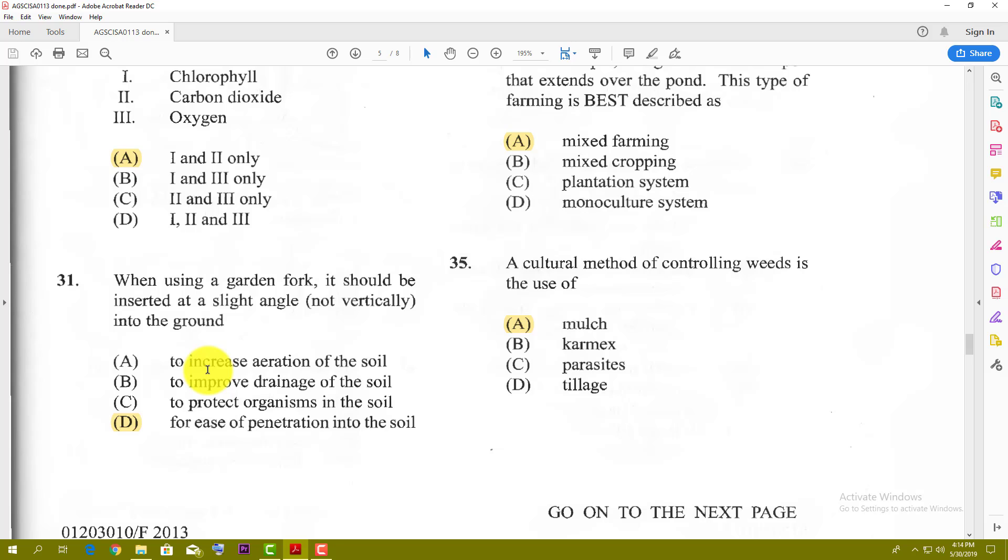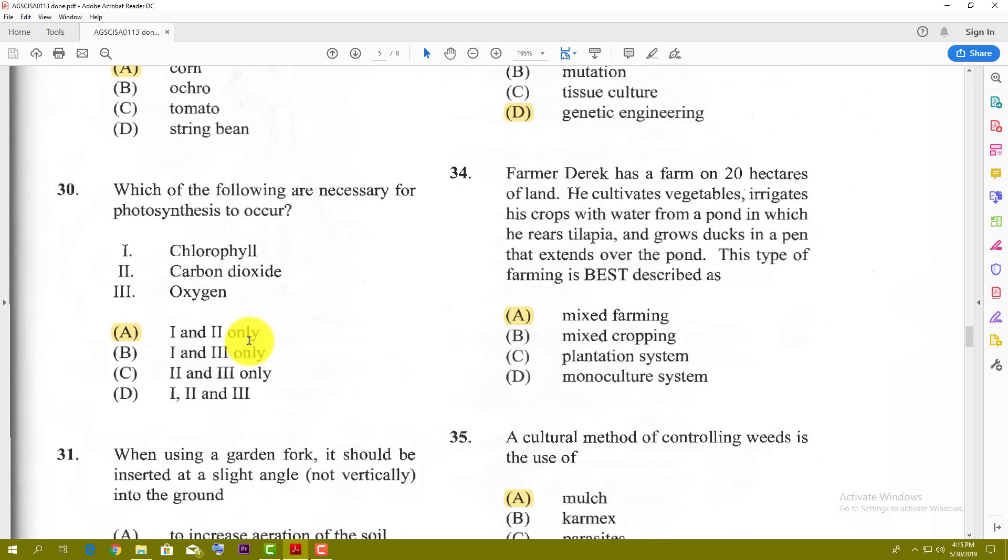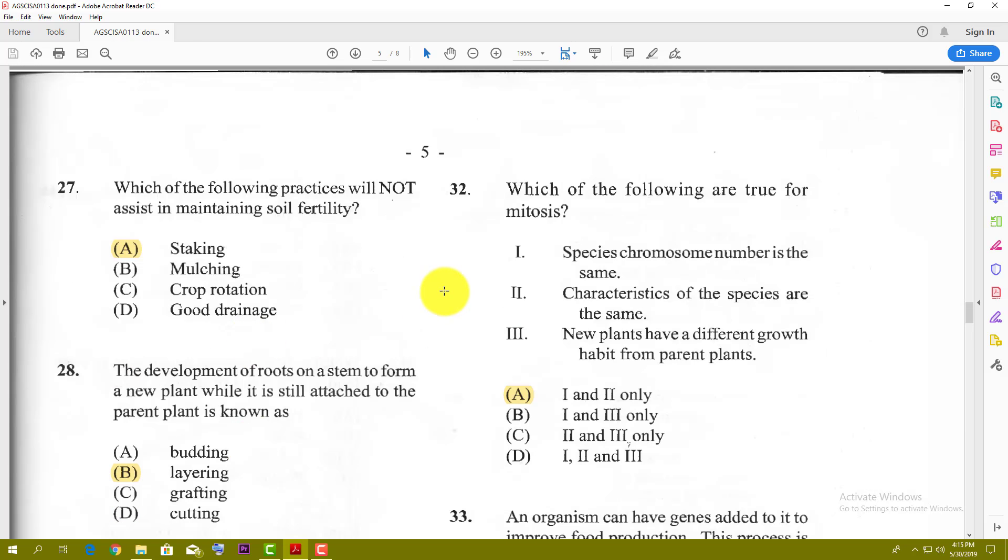Number thirty-one: when using a garden fork, it should be inserted at a slight angle, not vertically, into the ground. Why? For ease of penetration into the soil. It makes it easier to penetrate the soil from an angle. Number thirty-two: which of the following are true of mitosis? Mitosis is a type of cell division. The options are: species chromosome number is the same, characteristics of the species are the same, or new plants have different growth patterns from parent plants. The best answer is one and two, which is species chromosome number is the same and characteristics of the species are the same. Number three tends to be dictated by nature, the environment.